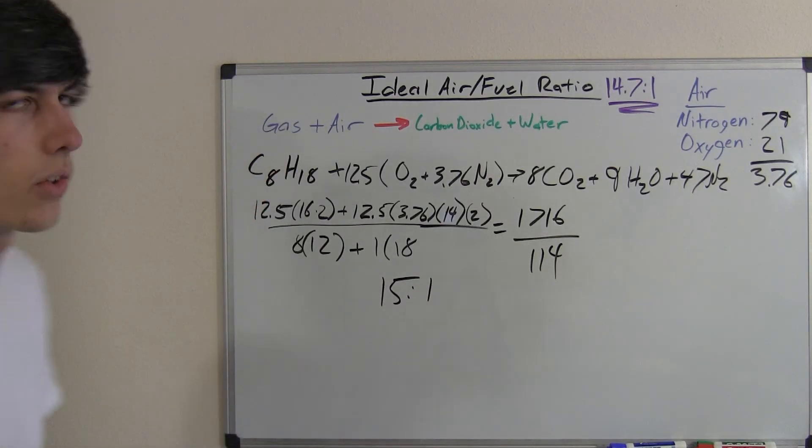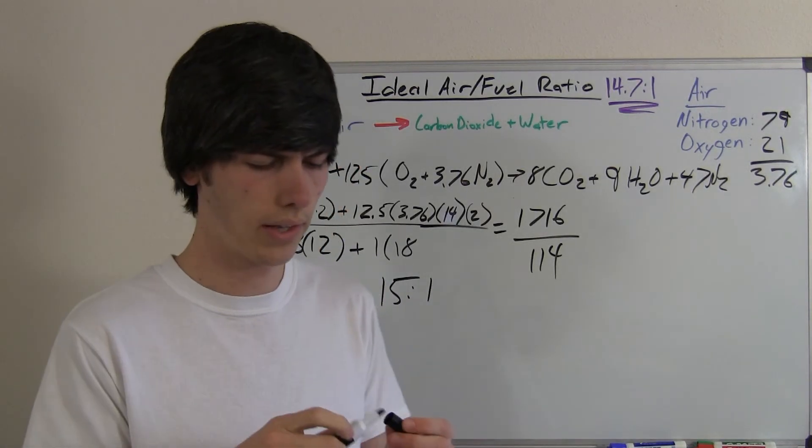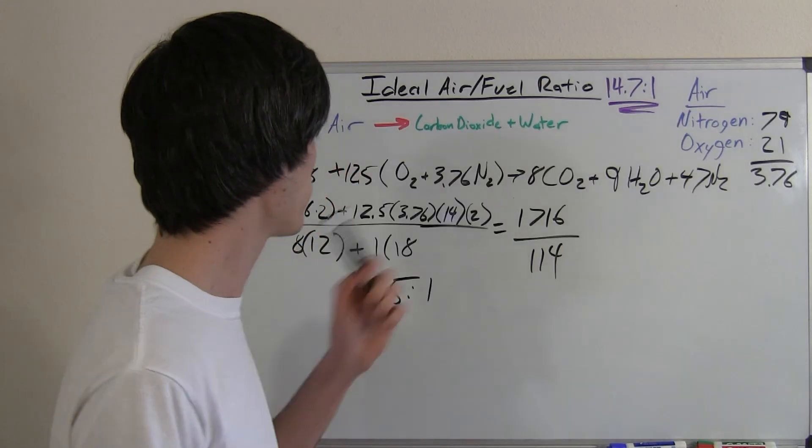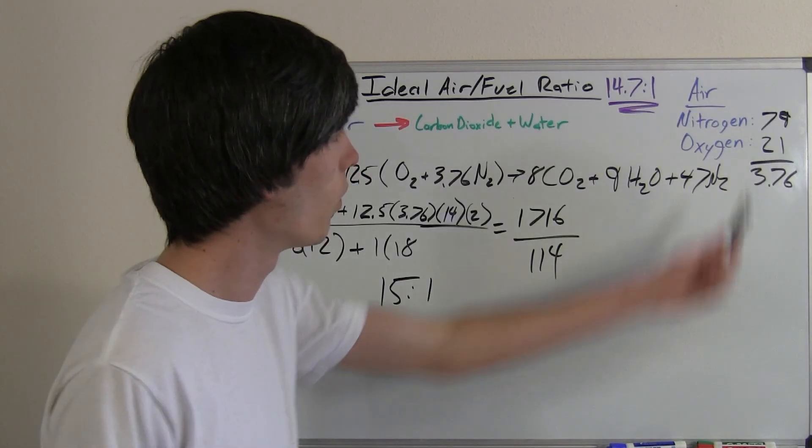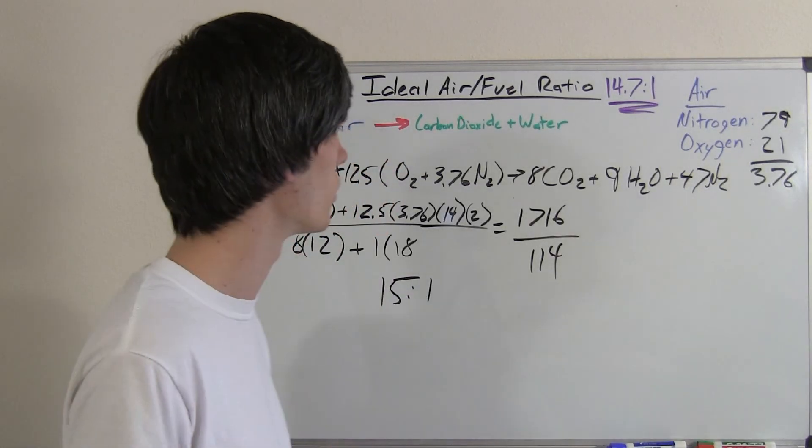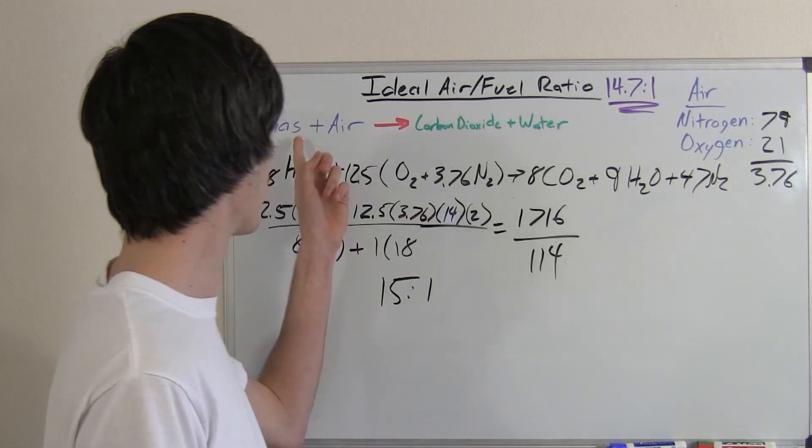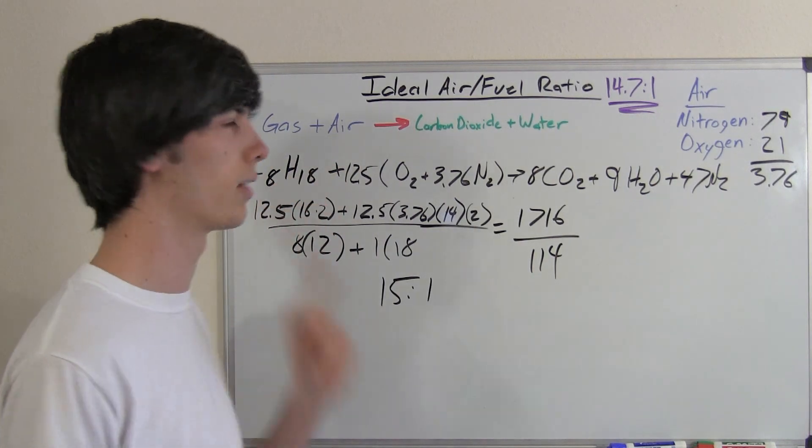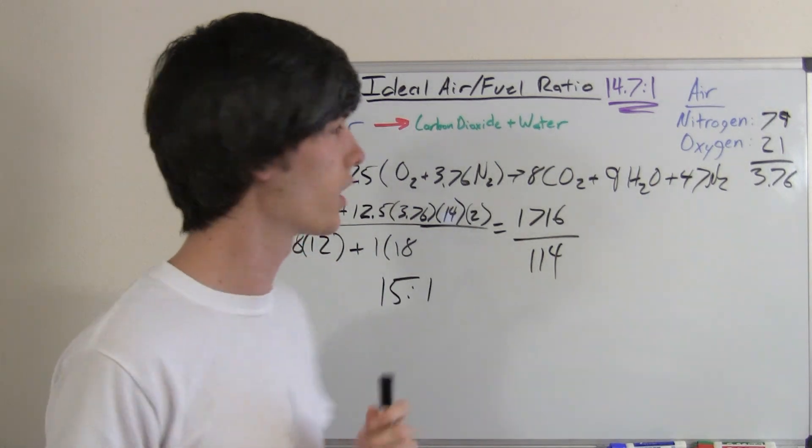Now you're asking yourself, okay, 15 to 1, that's not 14.7 to 1, but taking into consideration, we did have a couple assumptions. One being that air was 79% nitrogen and 21% oxygen. The other being that gas can be perfectly represented by octane, which is C8H18, which it cannot.